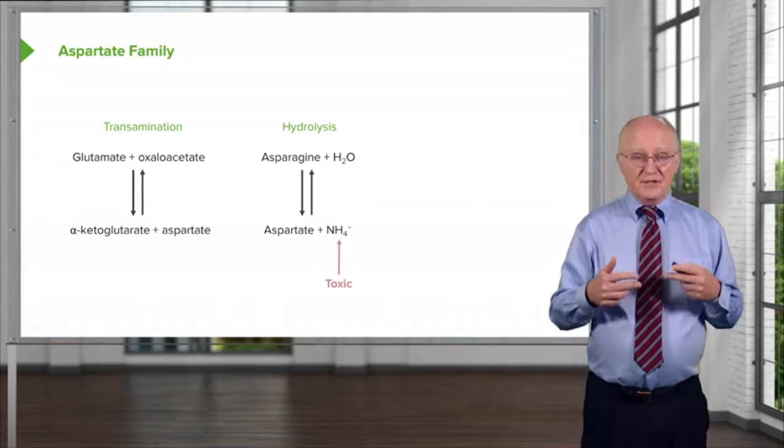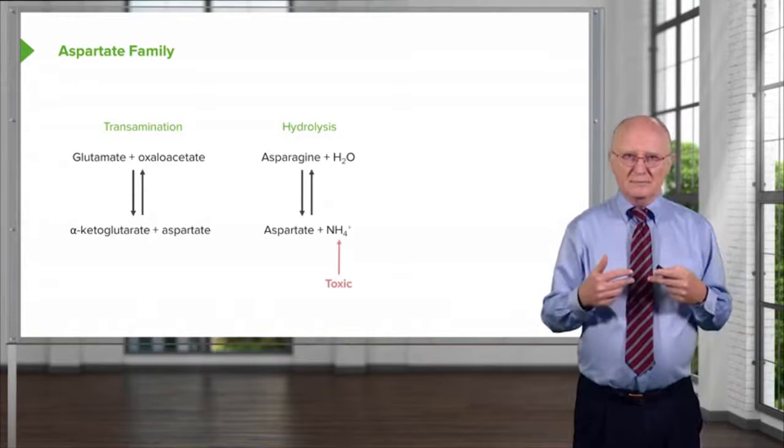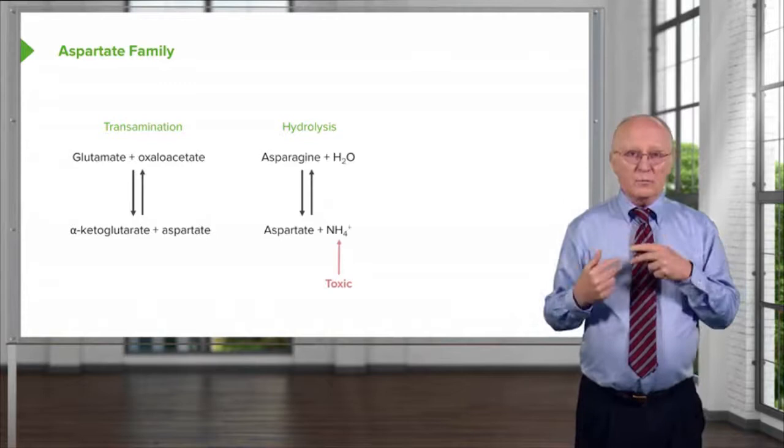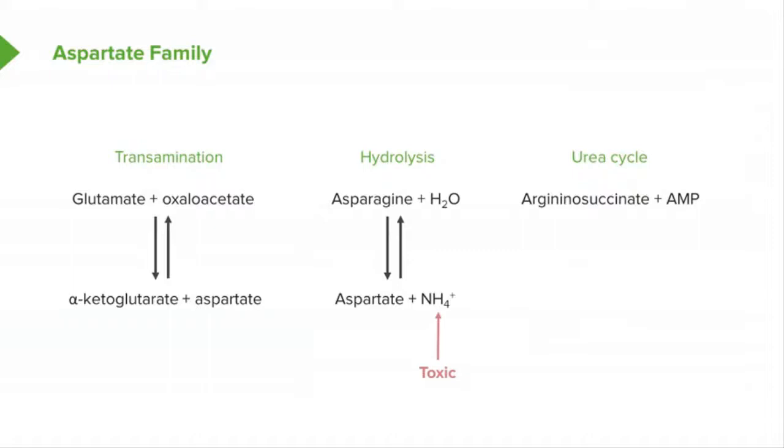Ammonia is a toxic compound. If the cell needs aspartate, they're going to do this reaction, or if the cell is breaking down asparagine, it's got too much asparagine, it'll do this reaction. But that ammonium ion has to be gobbled up somewhere or it's going to cause a problem.